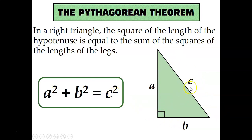The hypotenuse is the longest side, which is always across the right triangle from the right angle. So, the sum of the squares of the legs is equal to the square of the hypotenuse.